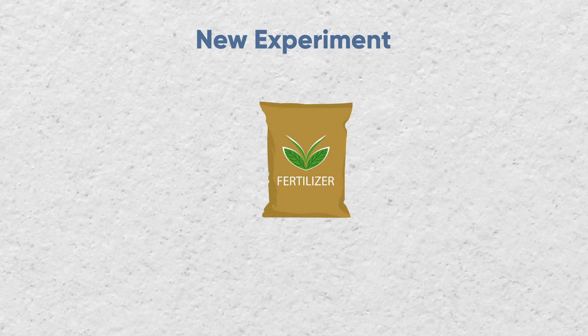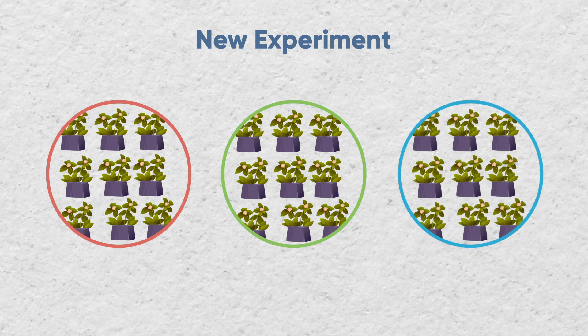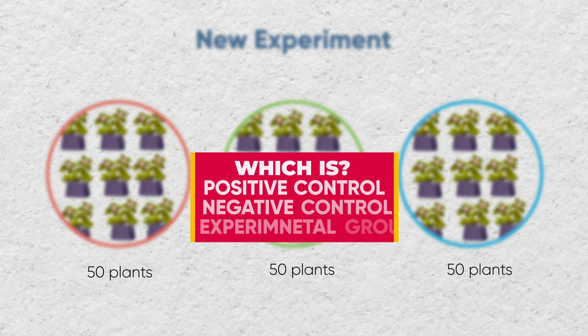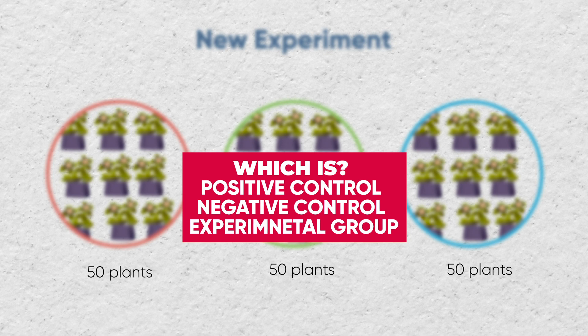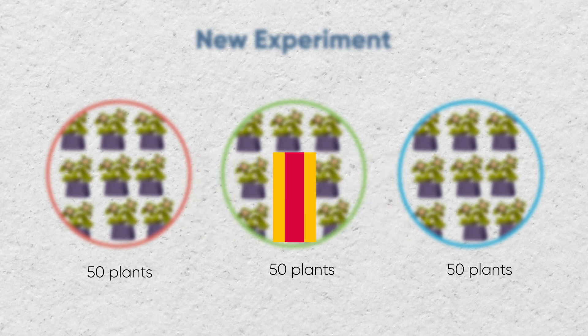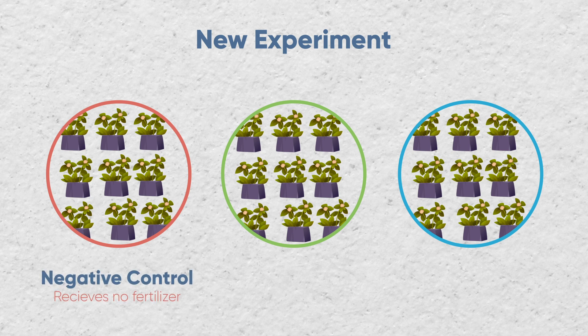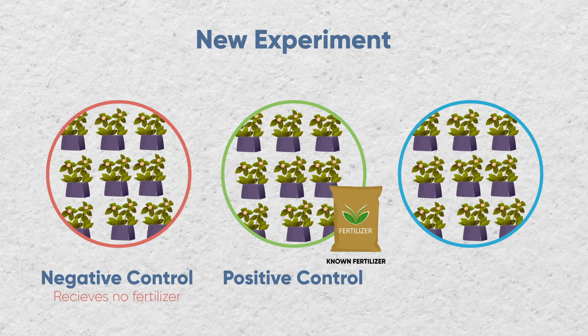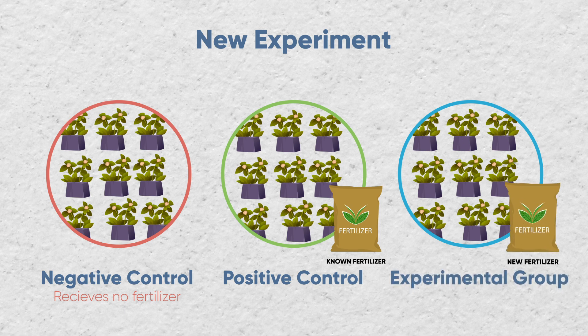Now let's design an experiment where you want to test the effect of a new fertilizer on plants. We are going to have three groups and each group has 50 plants. The negative control would be a group that receives no fertilizer, the positive control would be a known fertilizer already in the market that increases the productivity of plants by 10%, and the experimental group will be the new fertilizer.